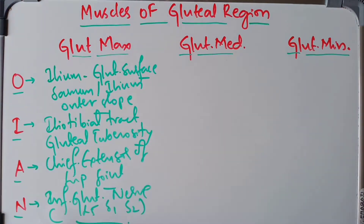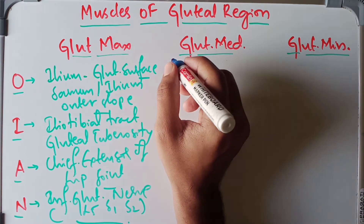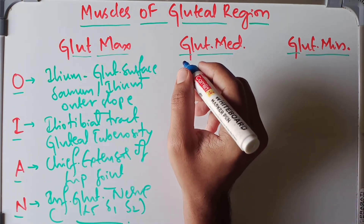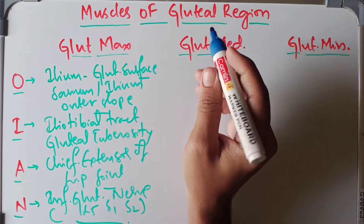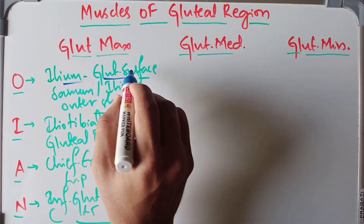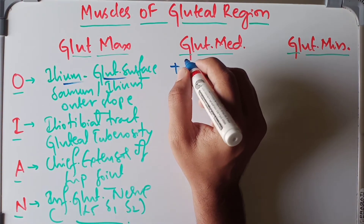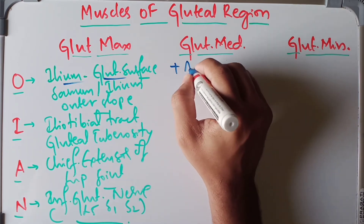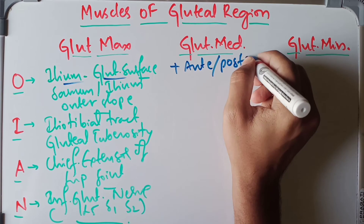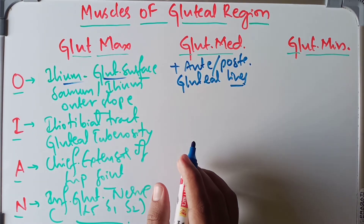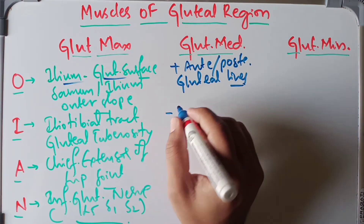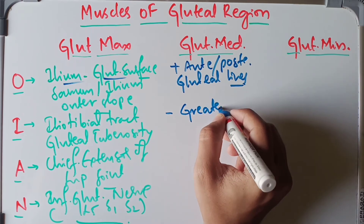Now for the gluteus medius — it is a fan-shaped muscle. Its origin is from the gluteal surface of the ilium, between the anterior and posterior gluteal lines. Its insertion is into the oblique ridge on the lateral surface of the greater trochanter of the femur.